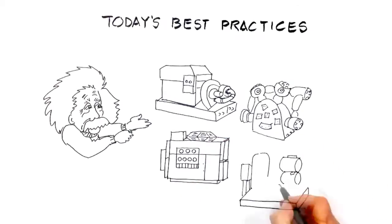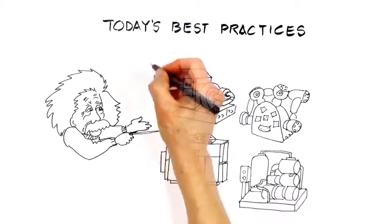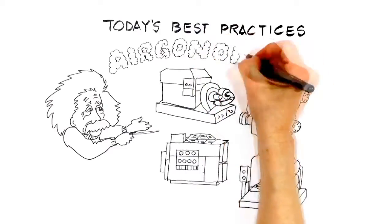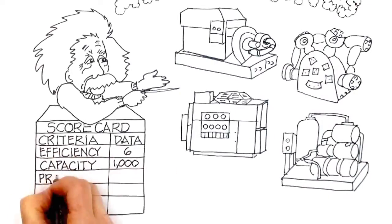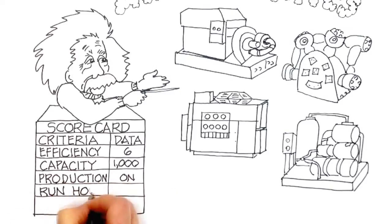We call this comprehensive view of compressor systems ergonomics. And it controls systems by scoring efficiency, capacity, production line loads, run hours, maintenance schedules, as well as other user criteria.